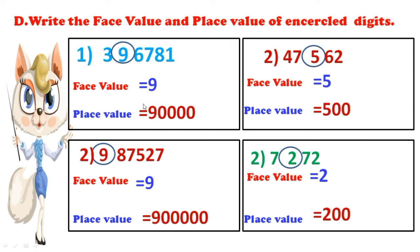Now we can observe what is the face value and place value. Face value at every time cannot change. Place value means the value of the number based on the place it is situated — it changes with position. In this problem, face value of 9 is 9; in the other problem also face value is 9. But here place value is 90,000, and here it is 9 lakhs. So students, practice this lesson and write it down in any notebook or slate.